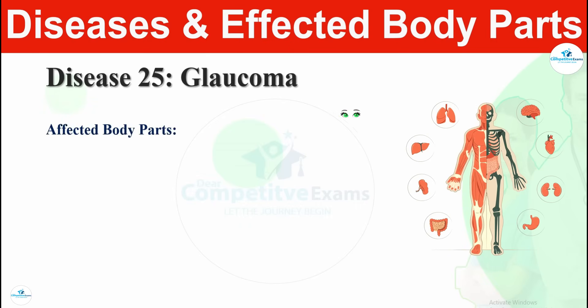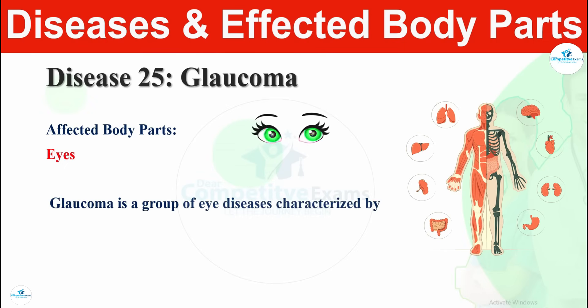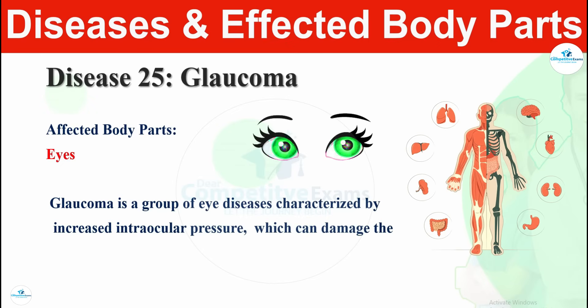Disease number twenty-five is glaucoma. Glaucoma affects the eyes. Glaucoma is a group of eye diseases characterized by increased intraocular pressure, which can damage the optic nerve and lead to vision loss. Glaucoma affects the eyes and can lead to a severe condition where a patient may even lose their vision.